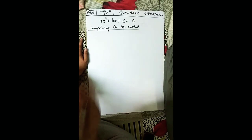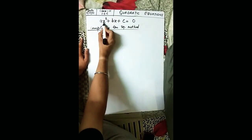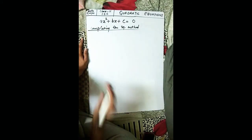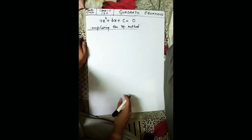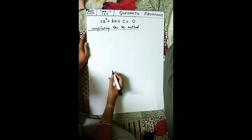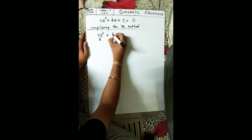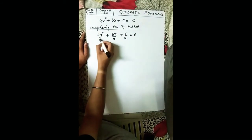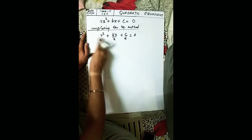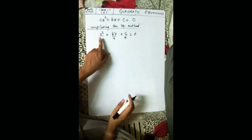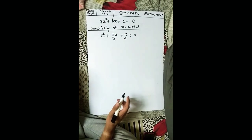The completing the square method has a specific process. First, there should be no coefficient before x² — that means 'a' should not be there. We must make the x² term unity. So we divide both sides by a; the a cancels and we are left with x². Our first step is complete: we have made x² unity.